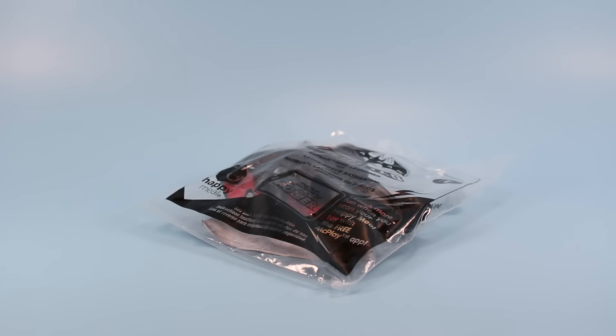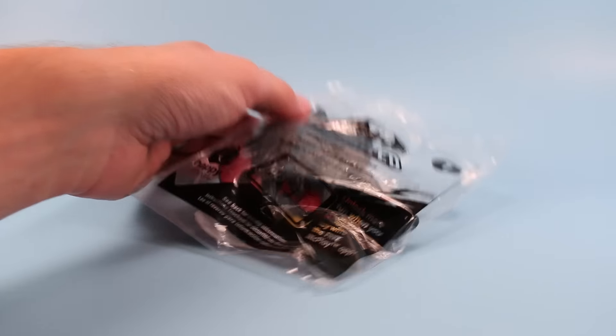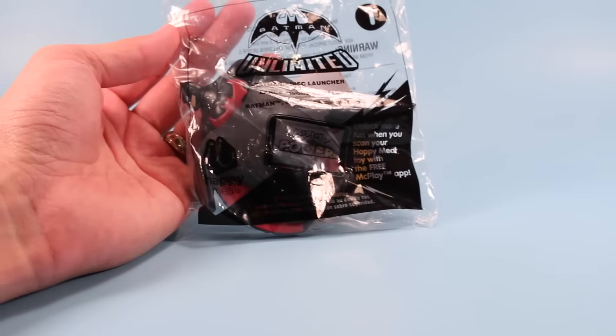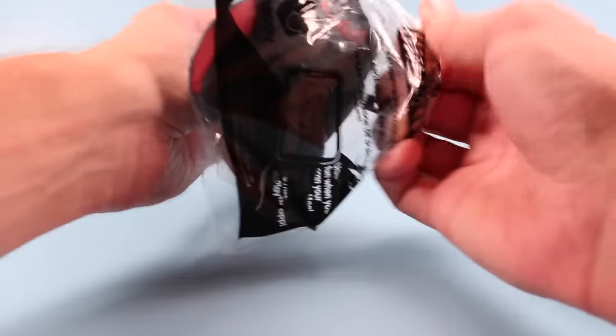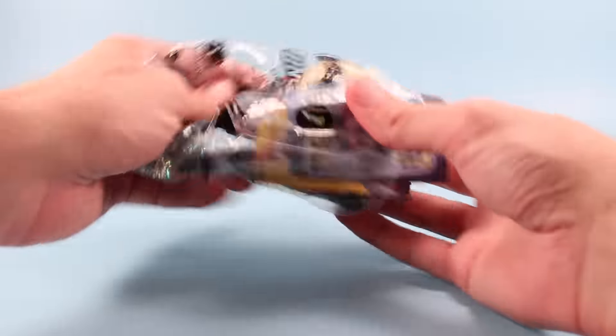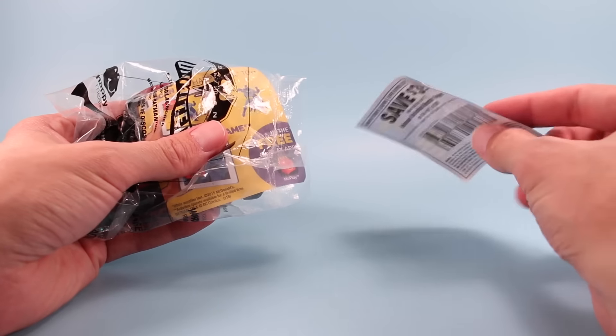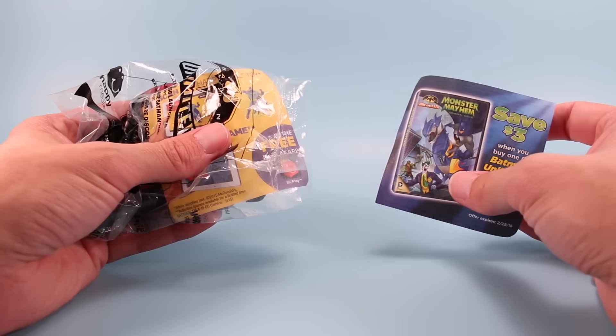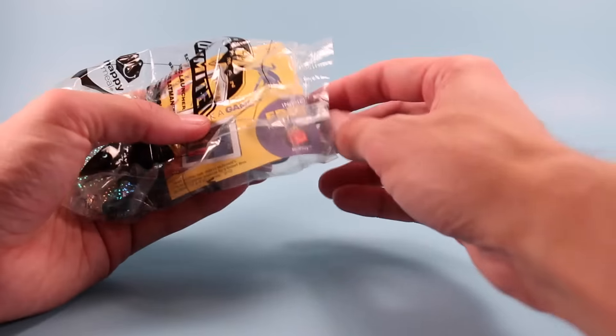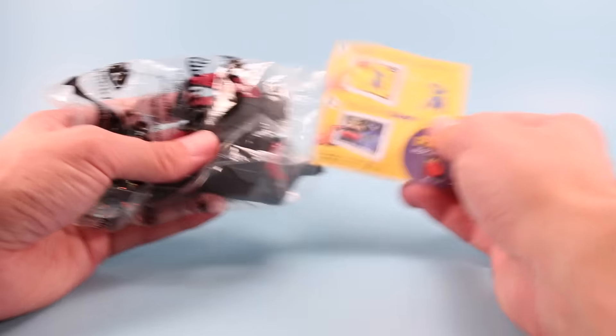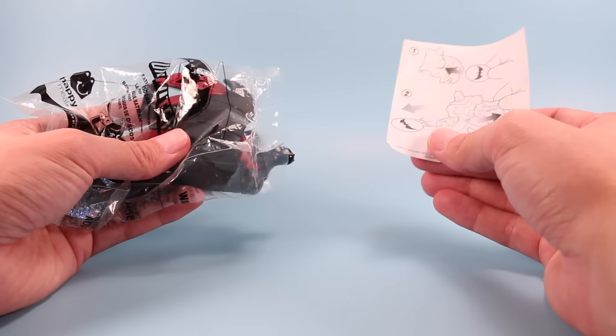Starting us off with the number one toy, we have a Batman Disc Launcher. All right, we've got a coupon for $3 off a Batman Monster Mayhem DVD. I gotta check that out. It's been a while since I've watched anything Batman. And we've got the instructions, of course.